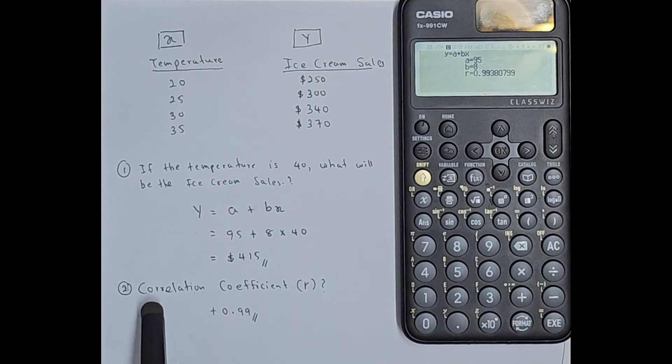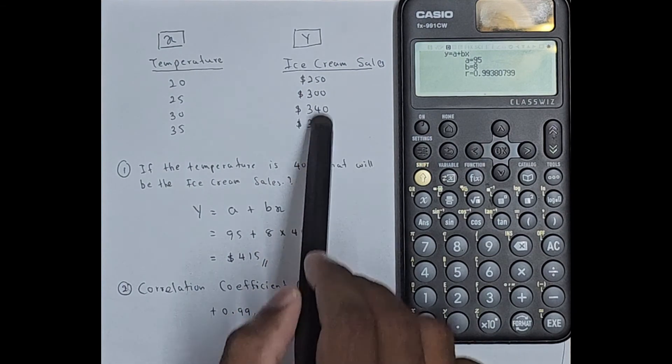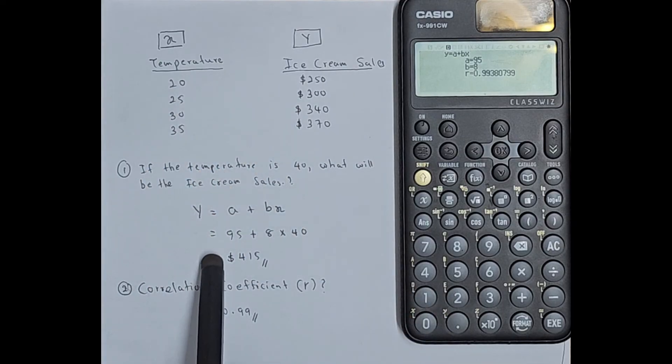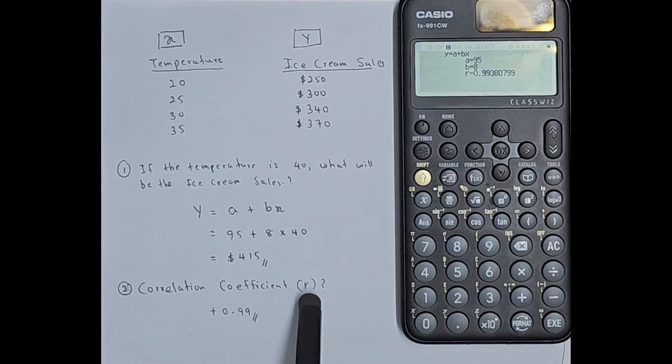Then in question 2 I am asking you to find the correlation coefficient. So here we can find the relationship between two variables. Based on the data that we have in this particular question, the correlation coefficient, the R value, is 0.99. Actually it is plus 0.99.